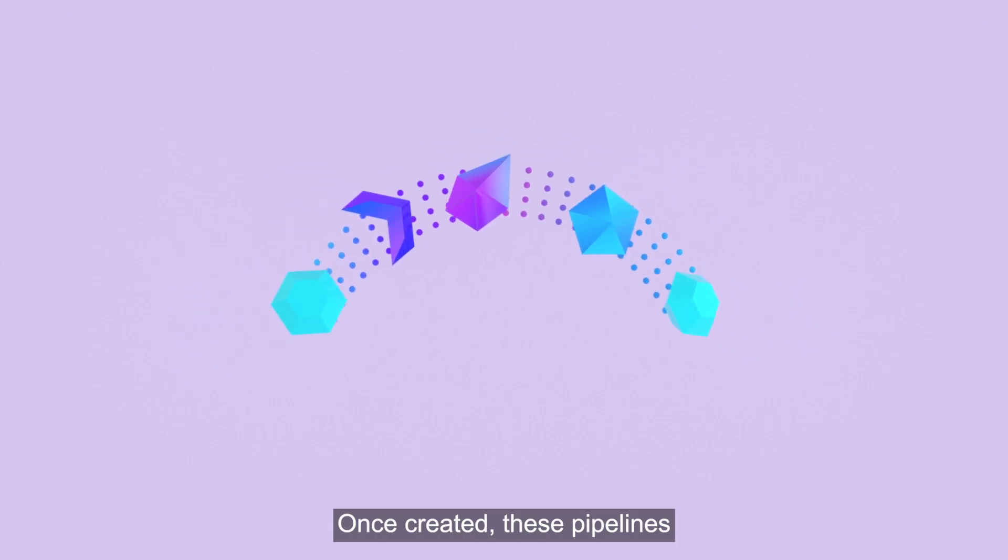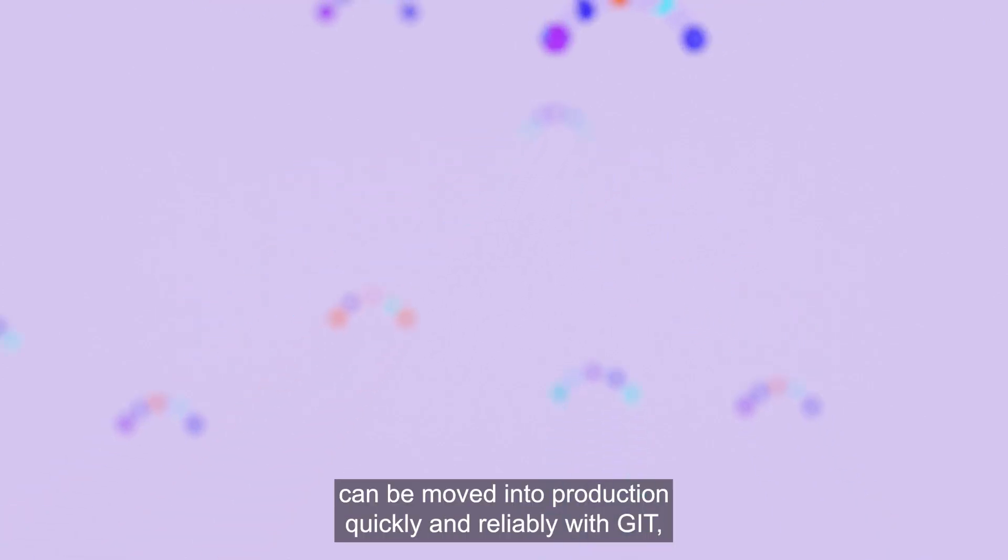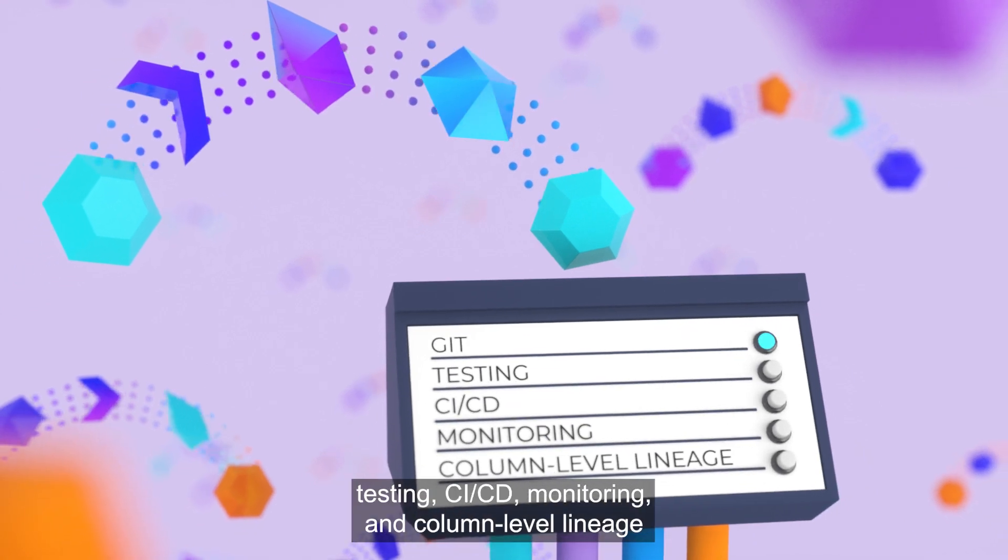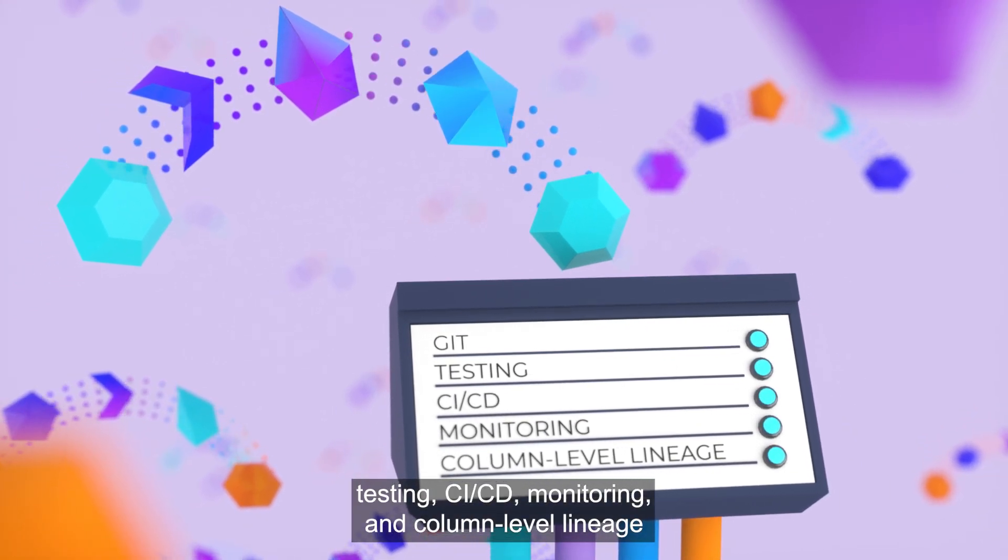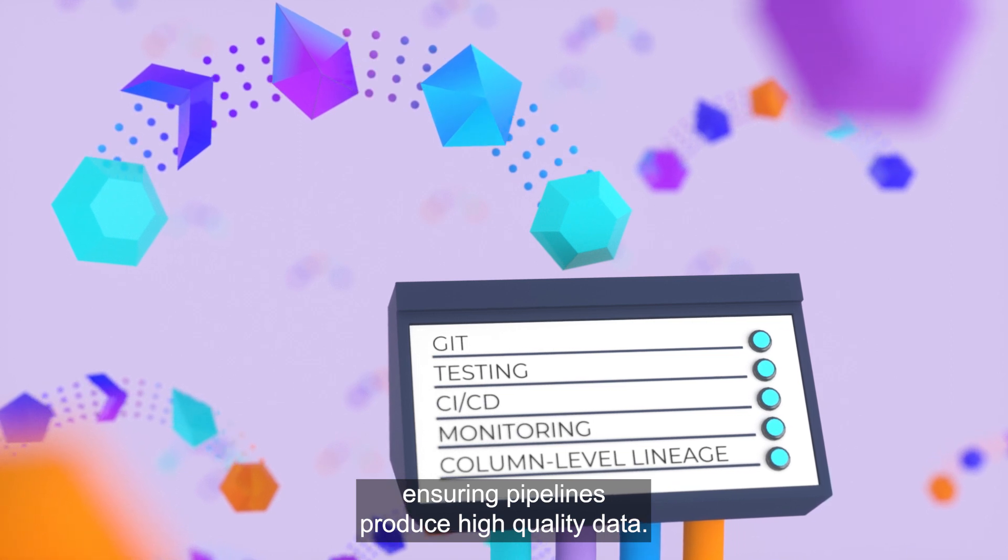Once created, these pipelines can be moved into production quickly and reliably with Git, testing, CI-CD, monitoring, and column-level lineage, ensuring pipelines produce high-quality data.